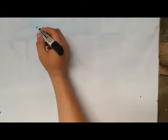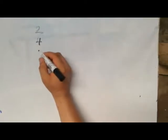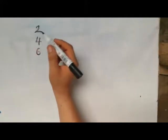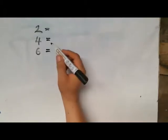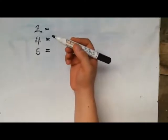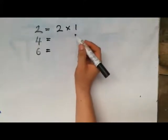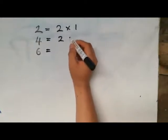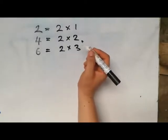The second method is called prime factorization. In this method, we look at the prime numbers. Let's use the same previous example — the numbers 2, 4, and 6. We are trying to use these numbers again with the prime factorization method. All you need to do is look at these numbers and try to get their factors — that is, the numbers that multiply together to give them. So 2 times 1 gives 2; 2 times 2 gives 4; 2 times 3 gives 6. These are prime factors.